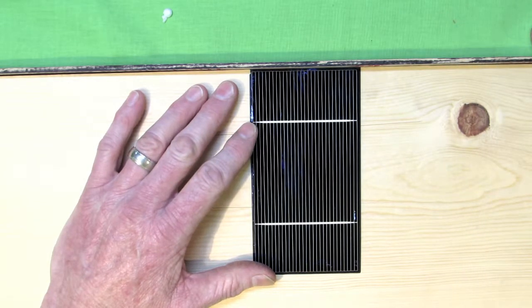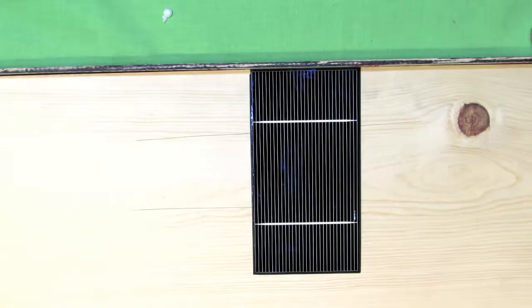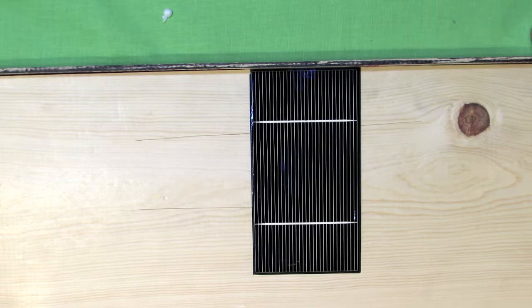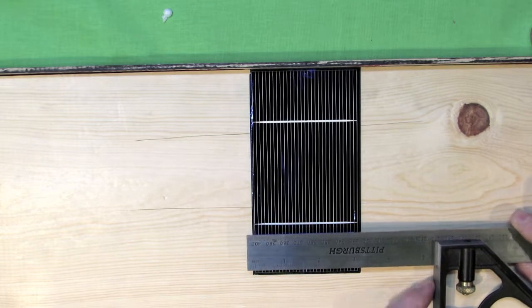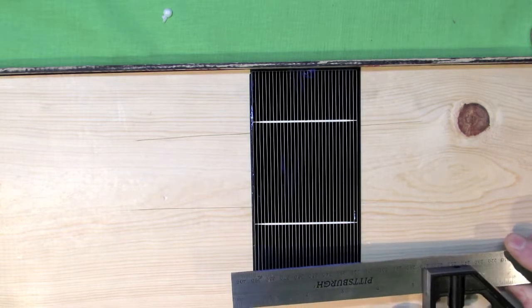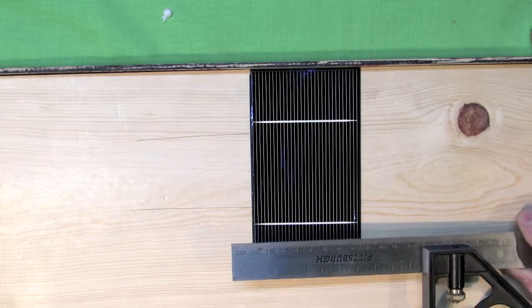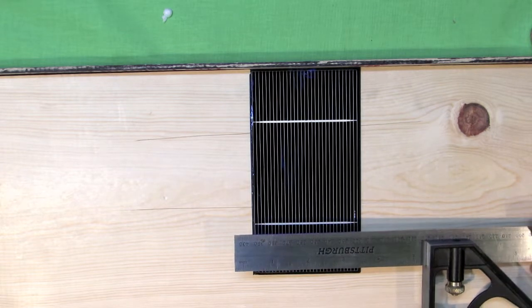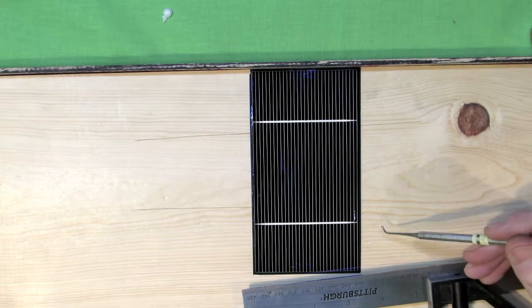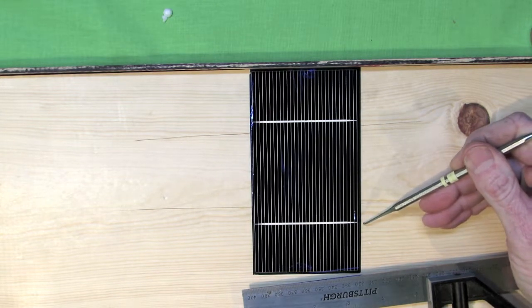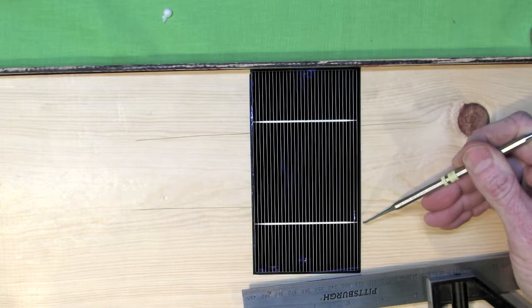We'll talk later about how temperature extremes affect solar panel performance, and you can imagine it's not good, but there's a specific formula I will share with you where you can determine exactly what effect temperature will have. Now, we need to know where to put the spring bend in the tabbing wire so that the bend occurs on the open space between the cells.